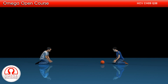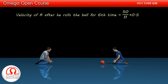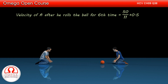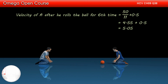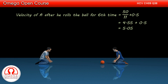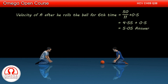This is the answer to part C of the question. If A rolls the ball again, he will gain 0.5 meter per second speed. So after rolling, his speed will become 50 by 11 plus 0.5, that is 4.55 plus 0.5, or 5.05 meters per second. Thus after rolling the ball for 6 times, his speed becomes more than 5 meters per second, which is more than the speed of the ball. So the ball will never reach A again. Thus A can roll the ball for a maximum of 6 times. This is the answer to part D of the question.